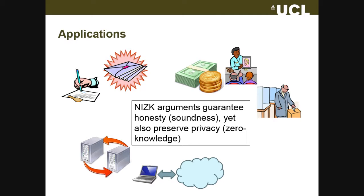There are lots of applications of non-interactive zero knowledge arguments, ranging from digital signatures and encryption to various forms of e-cash, e-voting, internet voting, multi-party computation, and verifiable cloud computing. Today I'll talk about very efficient non-interactive zero knowledge arguments — they have to be very small size and very efficient to verify. One typical example is verifiable computation: a weak client outsources computation to the cloud, gets the result back, and wants a compact proof that the result is correct, so the client doesn't have to redo the entire computation. There are also suggestions for using these efficient arguments in connection with e-cash systems like Zerocoin and Pinocchio coin.